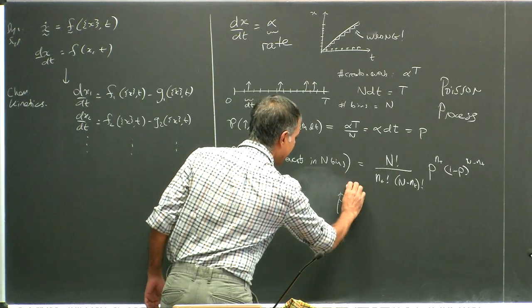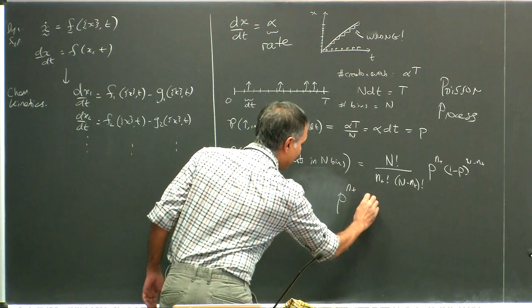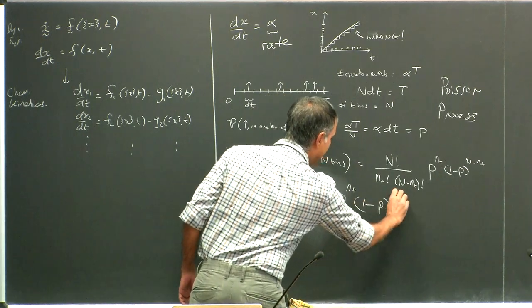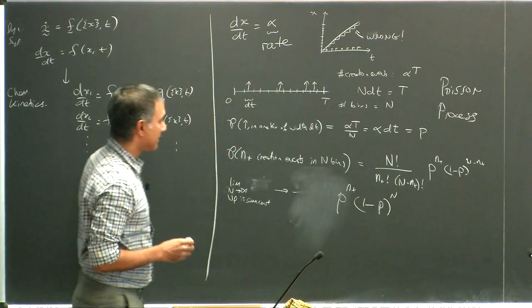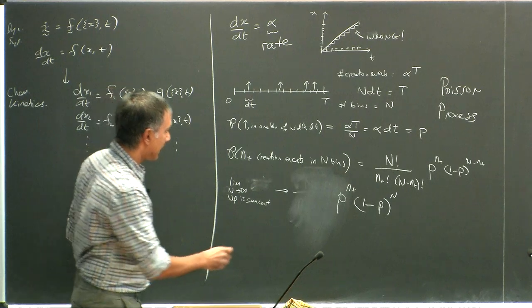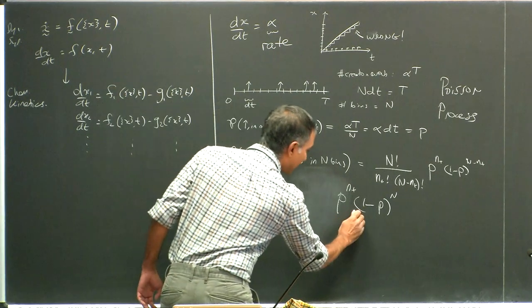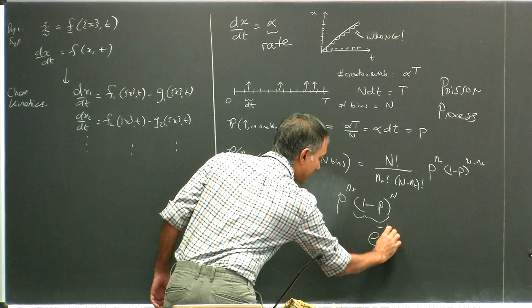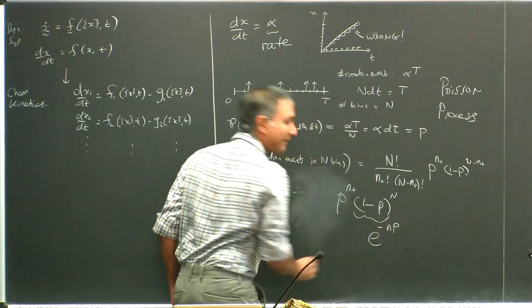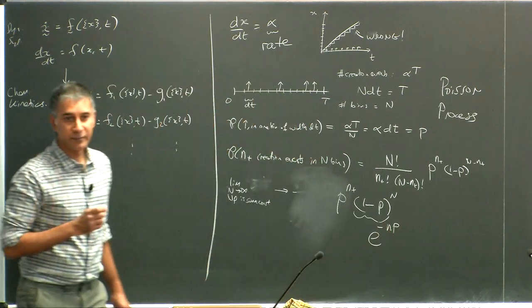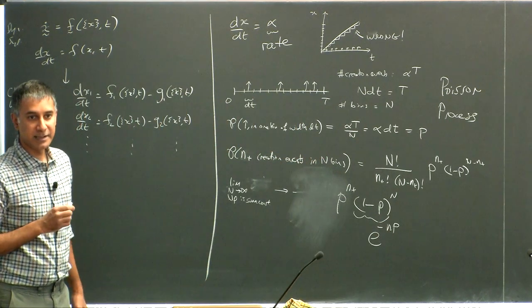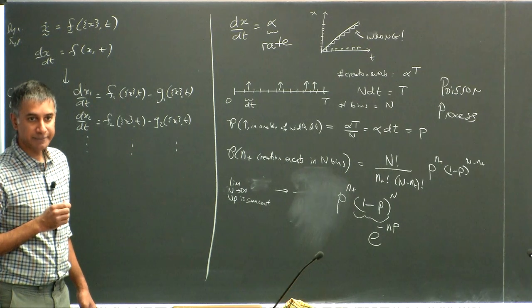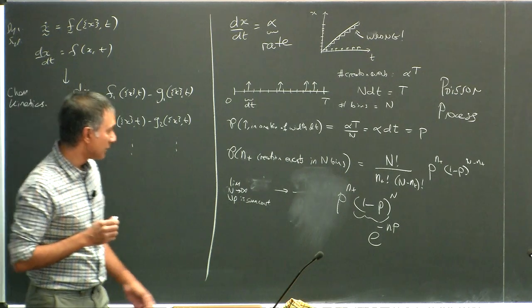In this limit, we have p^(n₊), which is fine, and (1-p)^N, because N is much bigger than n₊. We know the limit of (1-p)^N as p→0 and N→∞ is e^(-Np) = e^(-λ). This is just the standard form.